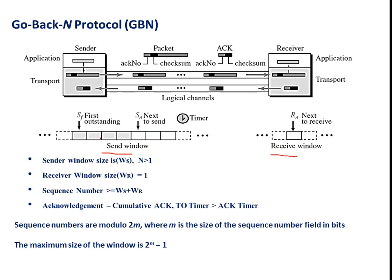This diagram shows the window size of the Go-Back-N protocol mechanism. The 'n' in Go-Back-N refers to the number of packets processed in a given time — for example, Go-Back-8 means eight outstanding packets are processed at a time. This mechanism is mostly implemented in the transport layer. The sender window size is greater than one; if it equals one it resembles stop-and-wait. The receiver window size is one.